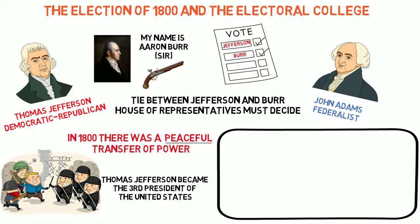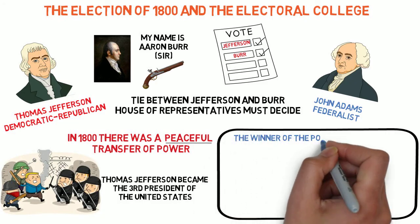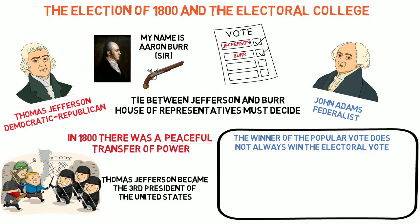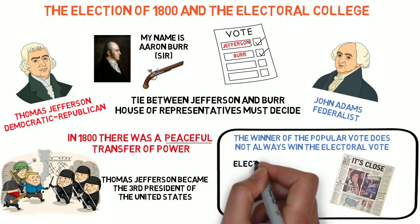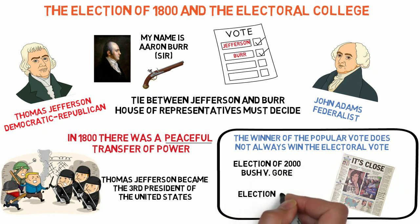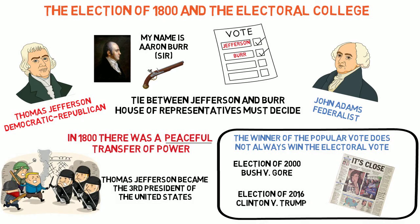The election of 1800 also highlights the debate surrounding the Electoral College. Although it does not happen frequently, the electoral vote does not always match the popular vote. Five times in American history, the winner of the popular vote did not win the electoral vote and therefore did not win the presidency. The two most recent were in the election of 2000 between George W. Bush and Al Gore, and the election of 2016 between Hillary Clinton and Donald Trump. These situations did not result in political violence, but they have led some people to question whether or not the electoral college system should be altered.